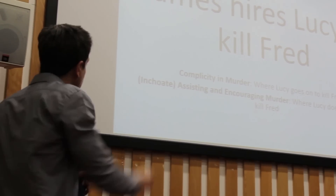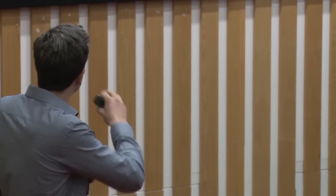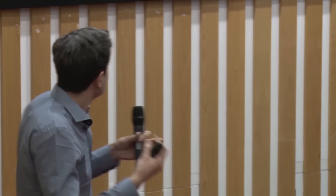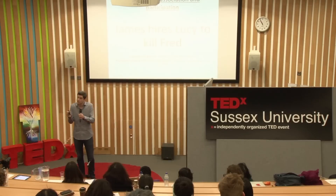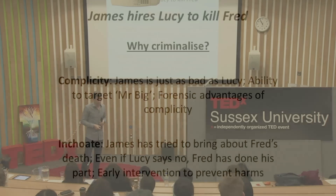Below that, we have what's called an inchoate — which simply means not quite finished — assisting and encouraging offence. In this case, assisting and encouraging murder. This applies where James hires Lucy, but Lucy for whatever reason doesn't actually kill Fred — either because she doesn't want to, or she is not able to, or the law wants to intervene at an earlier point. In that scenario we're not going to say James is a murderer, but we still want criminal liability, so we say he's guilty of assisting and encouraging murder.